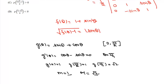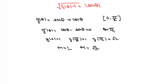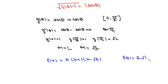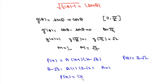It says p(x) is a polynomial whose roots are the minimum and maximum values of g(θ), so p(x) = a(x − 1)(x − √2). It also says p(2) = 2 − √2. Substituting: p(2) = a·1·(2 − √2) = 2 − √2, so a = 1. Thus p(x) = (x − 1)(x − √2).